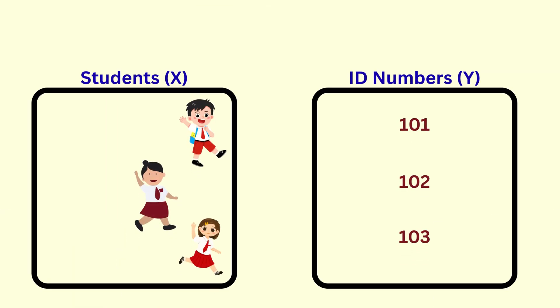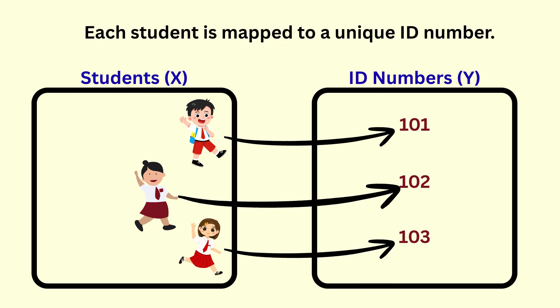Imagine assigning unique ID numbers to students in a class. Each student gets a different ID. No two IDs are the same. That's exactly how injective functions work.